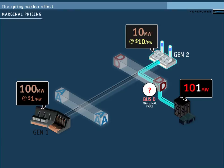Because Generator 2 would supply the next megawatt of load at bus D, the marginal price at bus D is $10, and Generator 2 is known as the marginal generator.